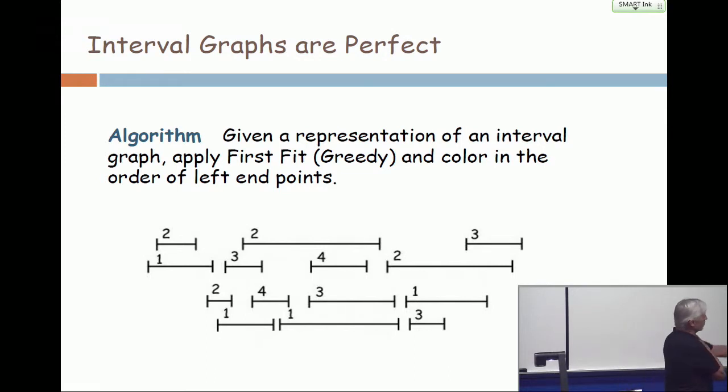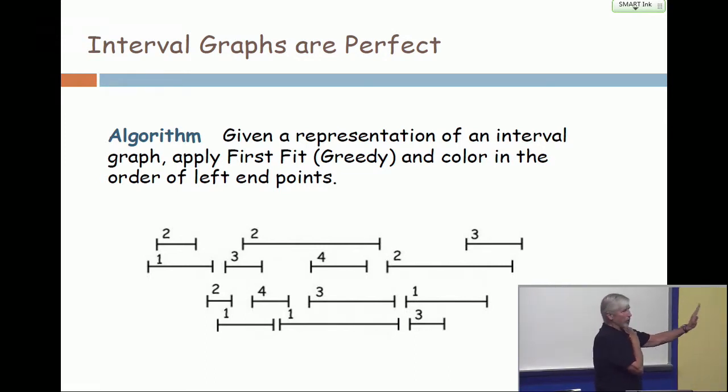So you see the interval that's sticking out to the left the most. First, that gets color 1. And the one which is slightly above it, whose left endpoint is in the second position, that one is colored next, and it's assigned 2. It's assigned 2 because that's the least legal color. All right. The next one after that is down 2 levels is another 2.